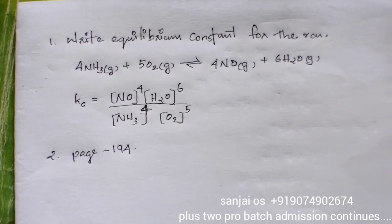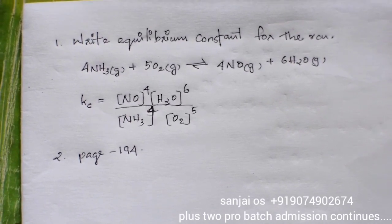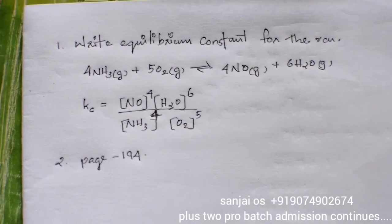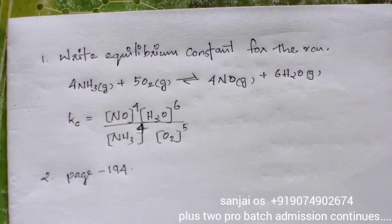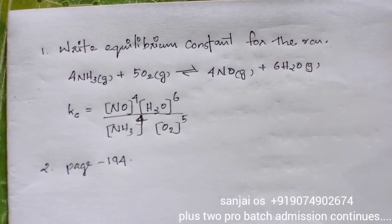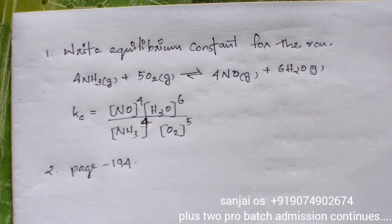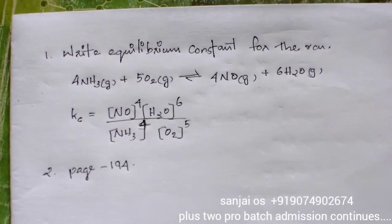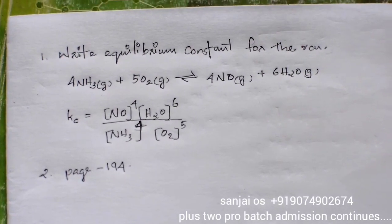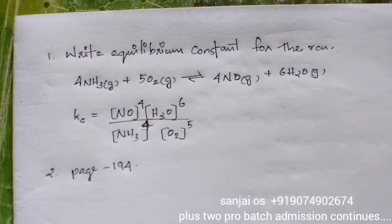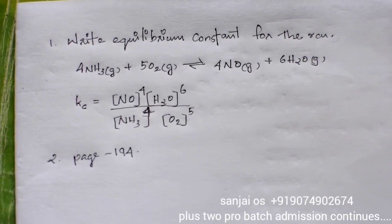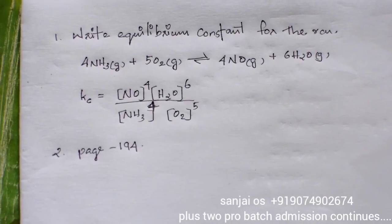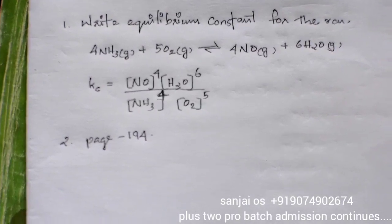The stoichiometric coefficients are added as powers. Kc equals concentration of NO raised to 4 into concentration of H₂O raised to 6, divided by concentration of NH₃ raised to 4 into concentration of O₂ raised to 5.